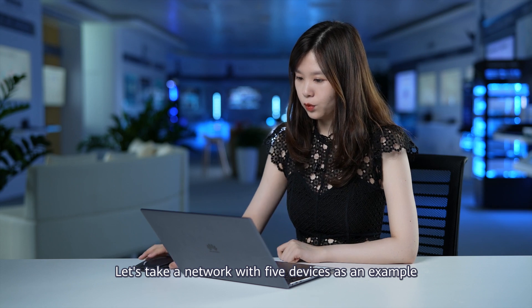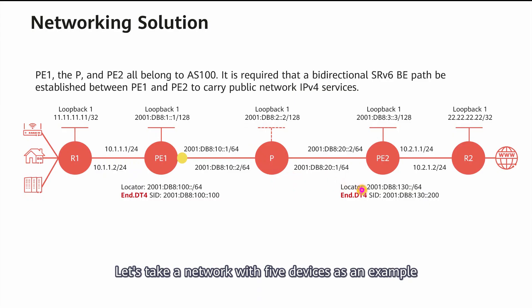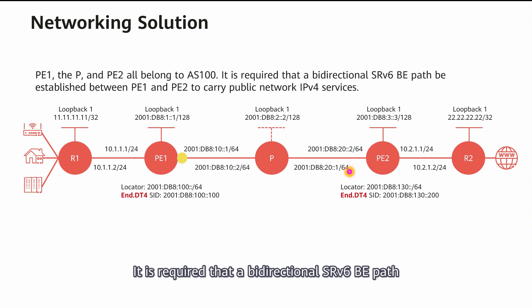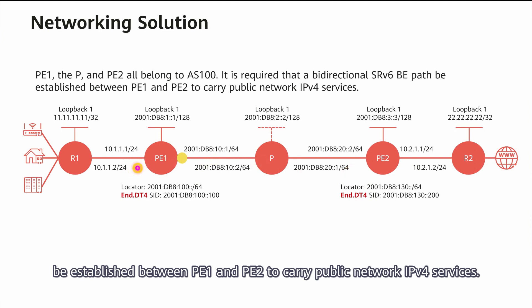Let's take a network with 5 devices as an example to describe public network IPv4 over SRv6BE. In this example, PE1, the P, and PE2 all belong to AS100. It is required that a bidirectional SRv6BE path be established between PE1 and PE2 to carry public network IPv4 services.